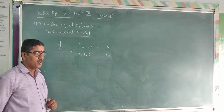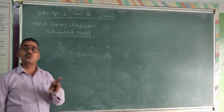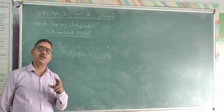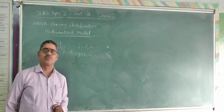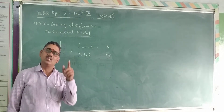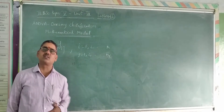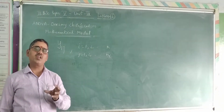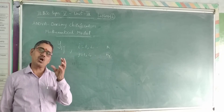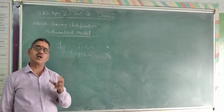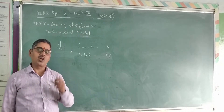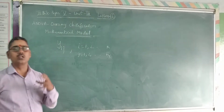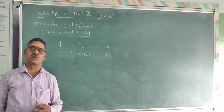So why do I say it is the yield? Because the variation can be obtained from two sources. Source number one: assignable cause of variation — these are controlled factors due to the treatments. Source number two: chance cause of variation — these are due to error, the uncontrolled factors.